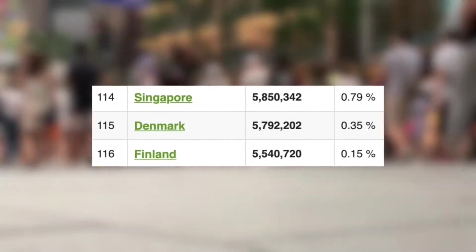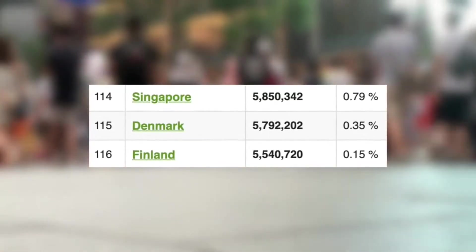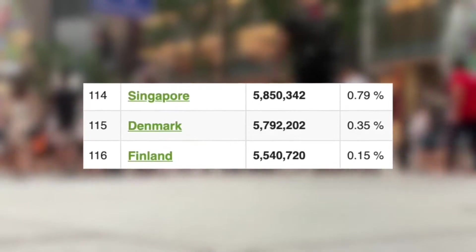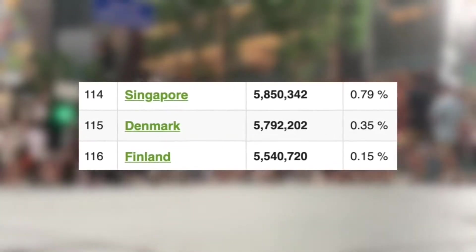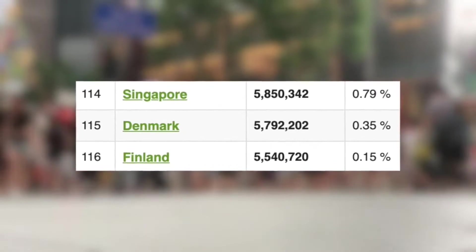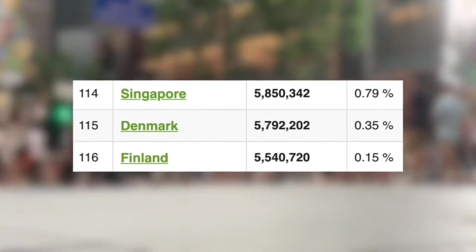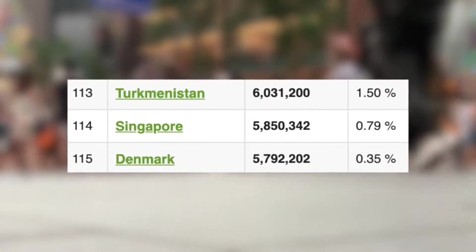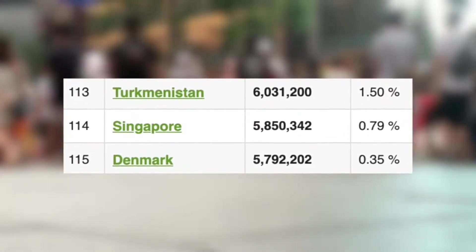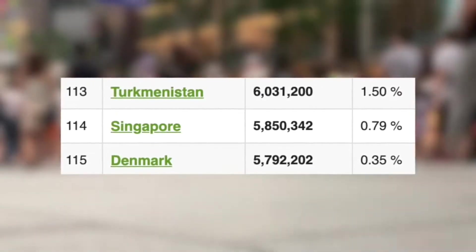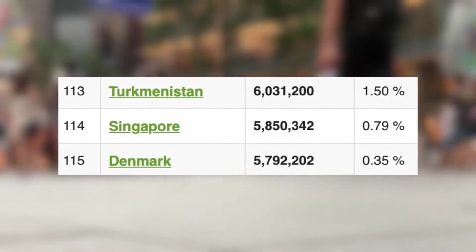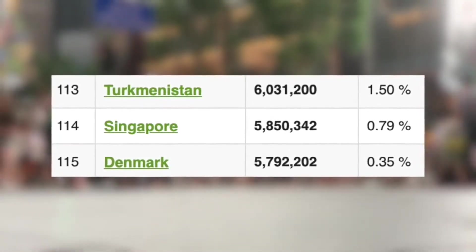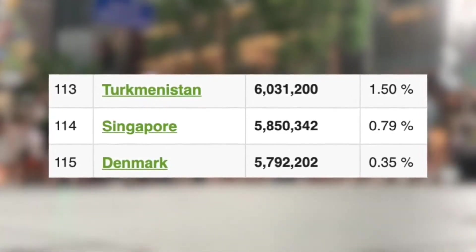Next we have Denmark, with 5.8 million people and a yearly growth rate of around 0.79%, making them the 114th most populated nation in the world, above Singapore and below Turkmenistan.